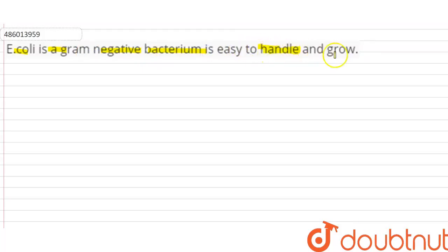In this statement, we will tell true or false whether the statement is true or false. This means that E. coli is a gram-negative bacterium, and to handle and grow is easy.